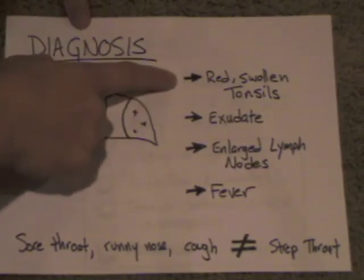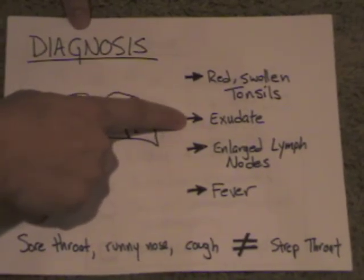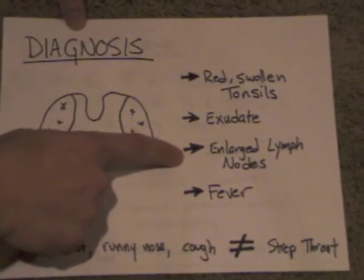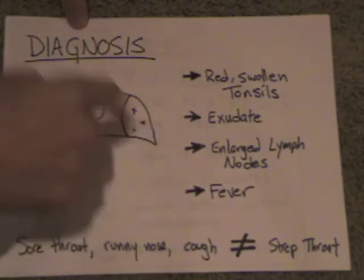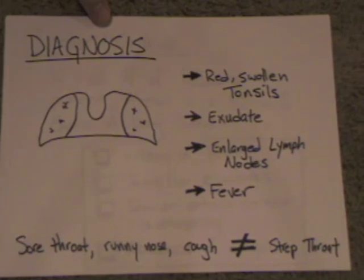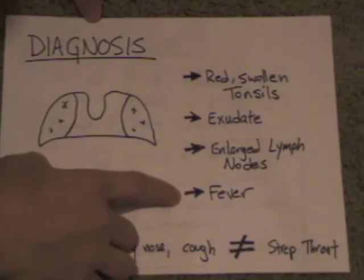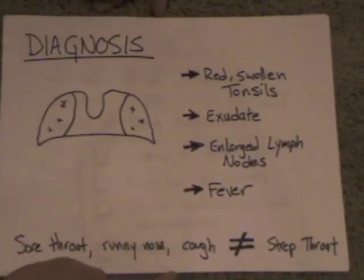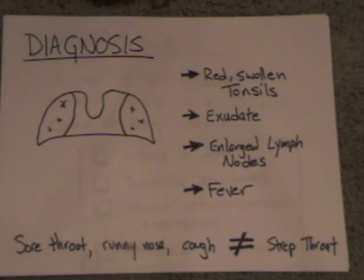Diagnosing strep throat: you'll see red swollen tonsils, you'll see the exudate — that white covering on the tonsils. You'll get enlarged lymph nodes, which are typically on the front of the throat or neck on either side of your windpipe or trachea, and you can sometimes feel small tender nodules along that. Fever can be present, though not always. Now, here's an important thing: if you have a sore throat but also have a cough and a runny nose, this is most likely not strep throat — it's going to be a viral infection that doesn't require any antibiotics.